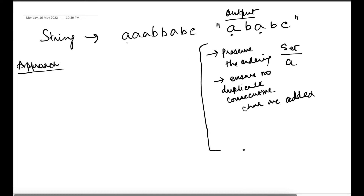So let's try to solve this with a pointer approach. We'll use an 'i' pointer and traverse through the string. The turning point for us would be the moment the next character is different from the current character — when s[i] differs from s[i+1]. That's where we've encountered something new and we can safely add one occurrence of the current character, then continue the rest of the check.